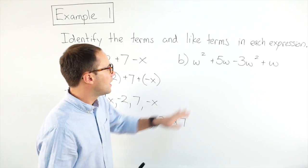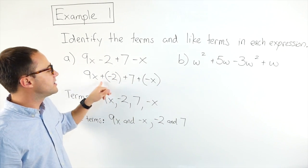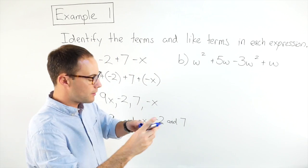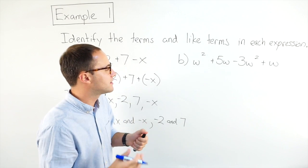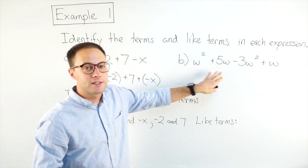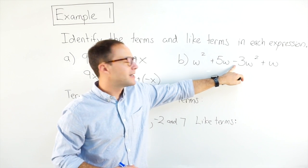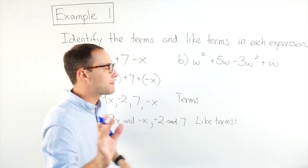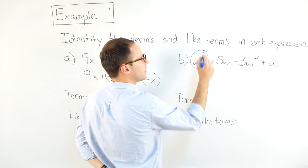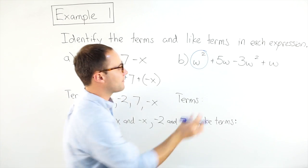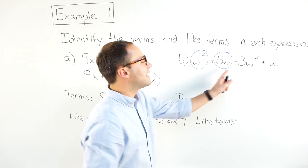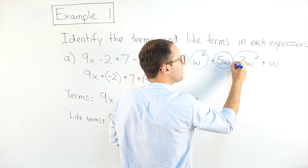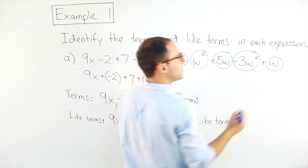For part B, I'm going to do it slightly differently. Another strategy a lot of students like to use is to circle the parts of the expression. If you see a negative or a subtraction, you include that with whatever comes after it. So I have w squared, then a plus — I won't circle that — then five w, then minus three w squared, so I'll circle that including the subtraction, and then w.